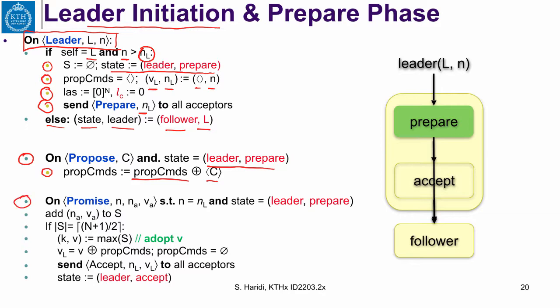When we get a promise from an acceptor and N equals our round number and we are in the leader prepare phase, we add the pair — the acceptor's round number and the accepted value — to S. When we collect a majority, we pick the max of these. The max is first the highest round number, and if there are multiple sequences, we pick the longest one. So we now have the sequence accepted by an acceptor with the highest number, and we augment it with the commands from the propose event, then reset the set of proposed commands.